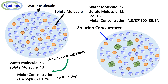Therefore, the freezing point must be lower than −1.2°C — for example, −2.8°C. This progressive freezing and concentration of the water phase causes the decrease of the freezing plateau with time in the case of a solution.